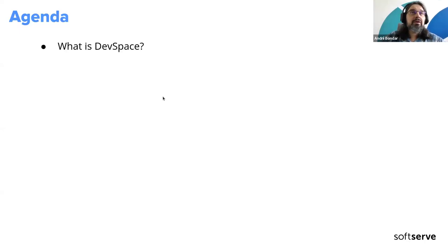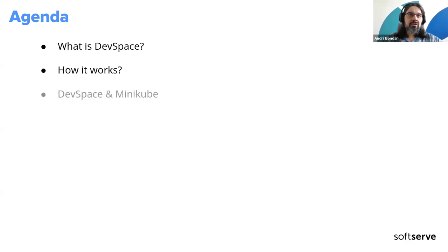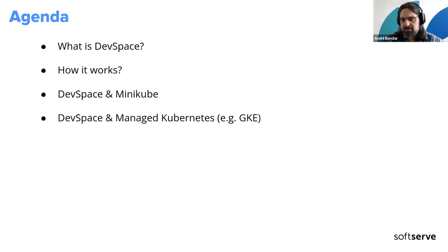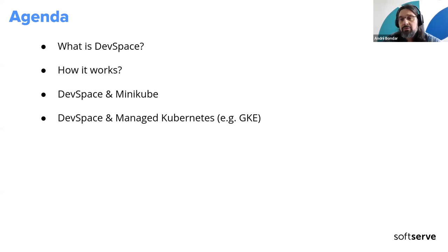We will see what DevSpace is, what the tool does and what we can use it for, how it works, how we can use it to deploy Kubernetes workloads into a local Minikube Kubernetes cluster for local development, and how we can easily switch between Kubernetes contexts. If needed, we can also deploy microservices into a cloud Kubernetes cluster like Google Kubernetes Engine.